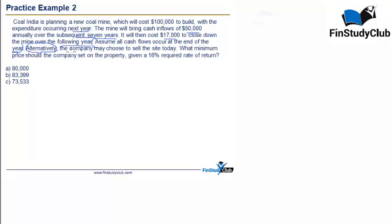Alternatively, the company may choose to sell the site today. Basically if I were to understand this question there is an option to use the site and there is an option to sell the site. The question is what minimum price should the company set on the property? What should be the selling price today given a 16% required rate of return? If I were to analyze this question, the question is basically giving us cash flows of usage pattern and the discount rate using which we can calculate the present value and asking us to create a break even with the selling price.